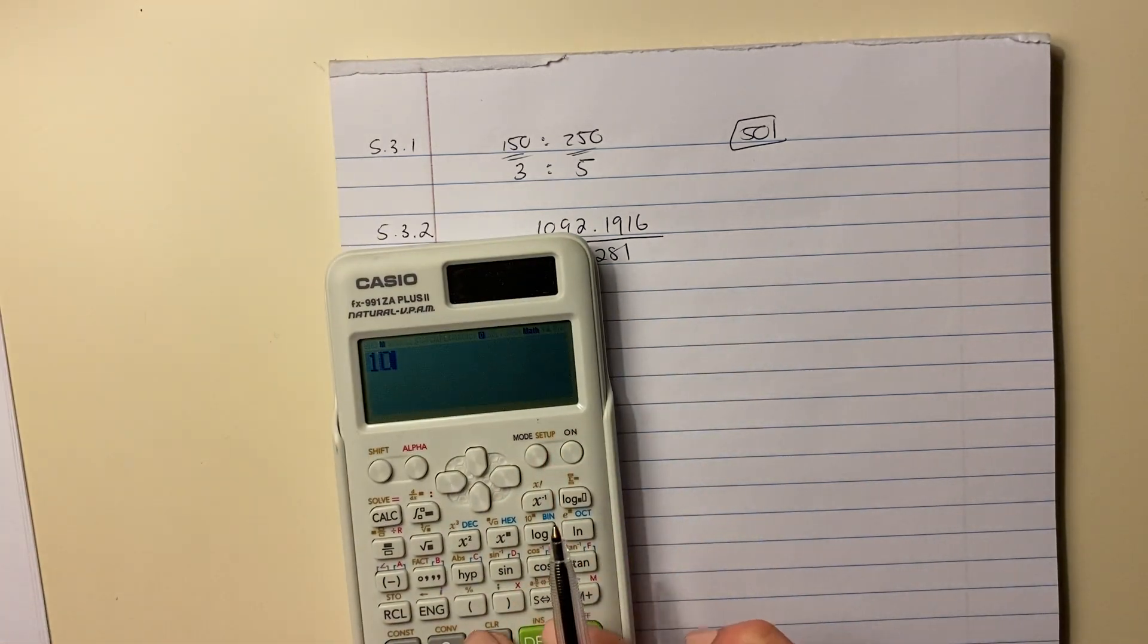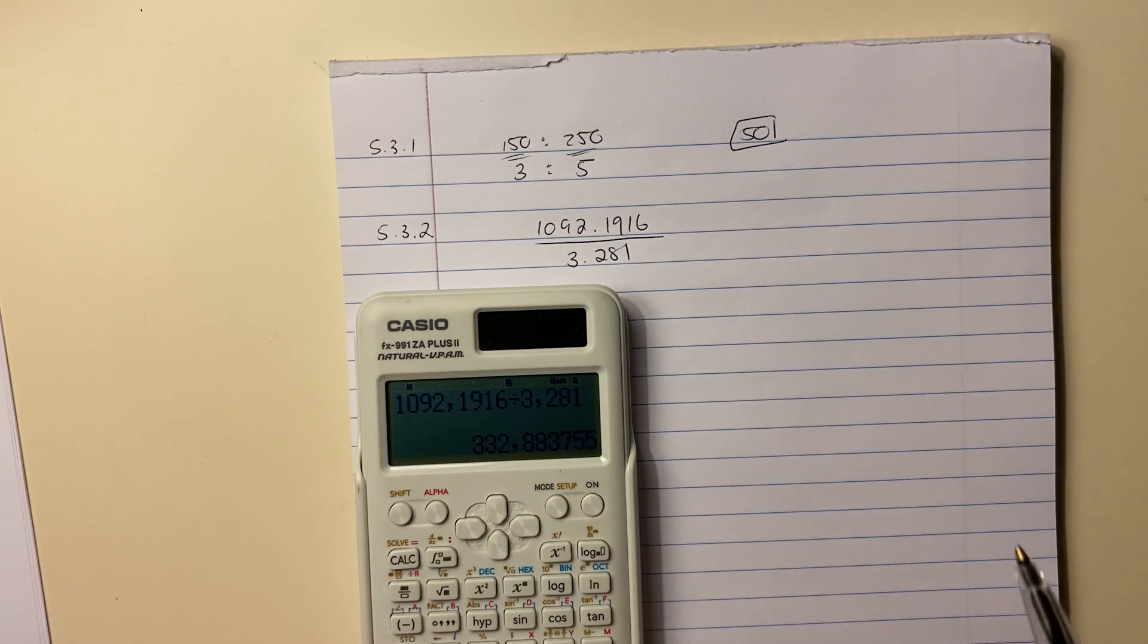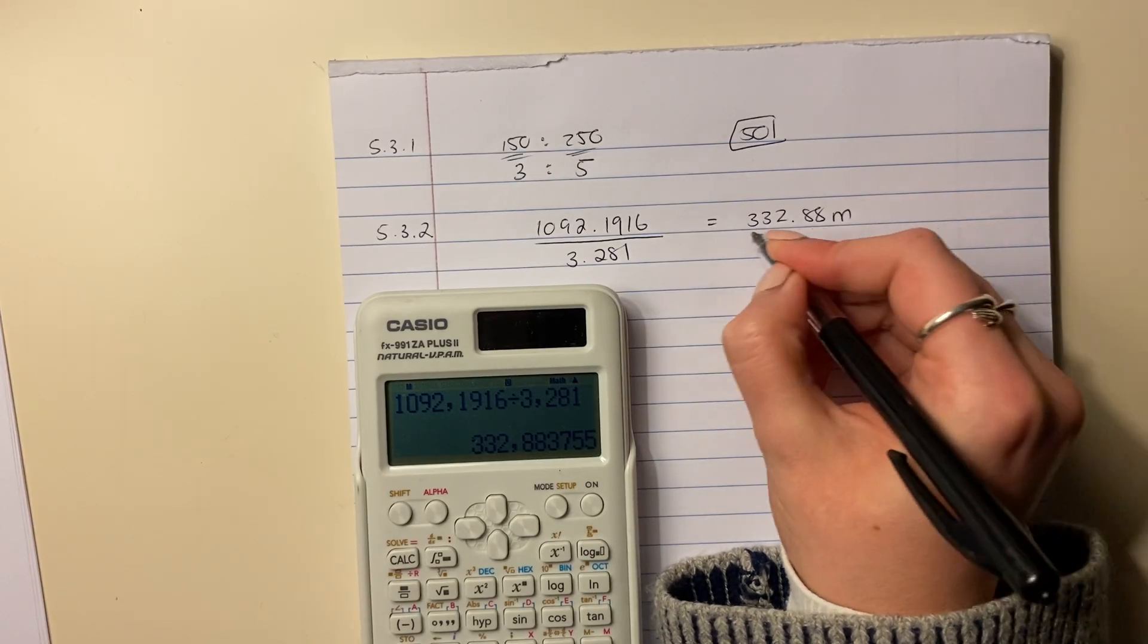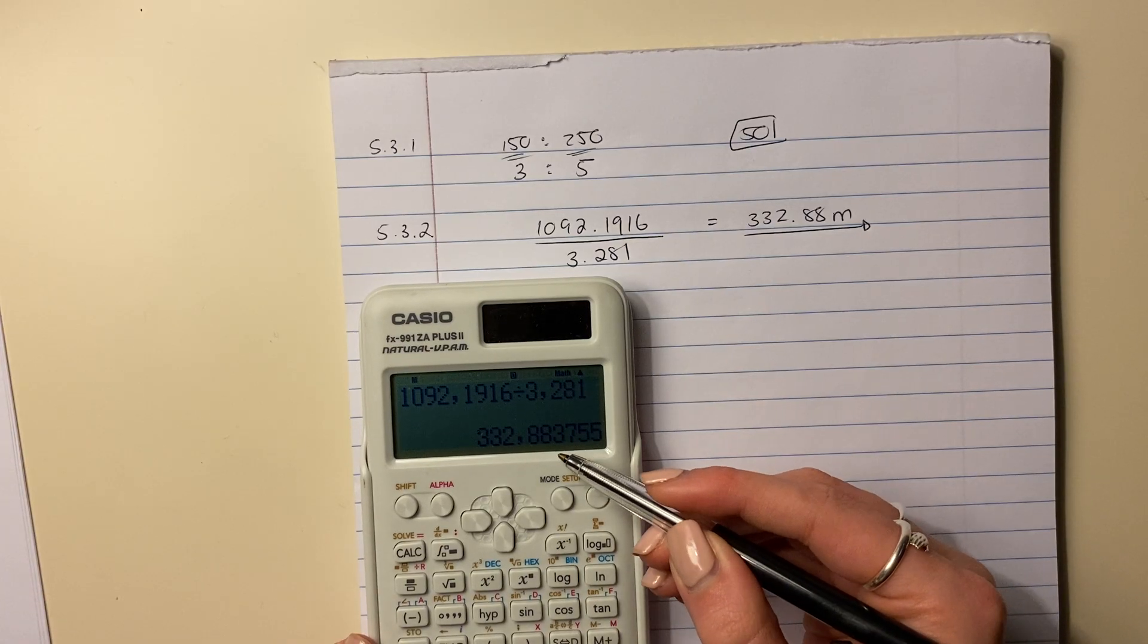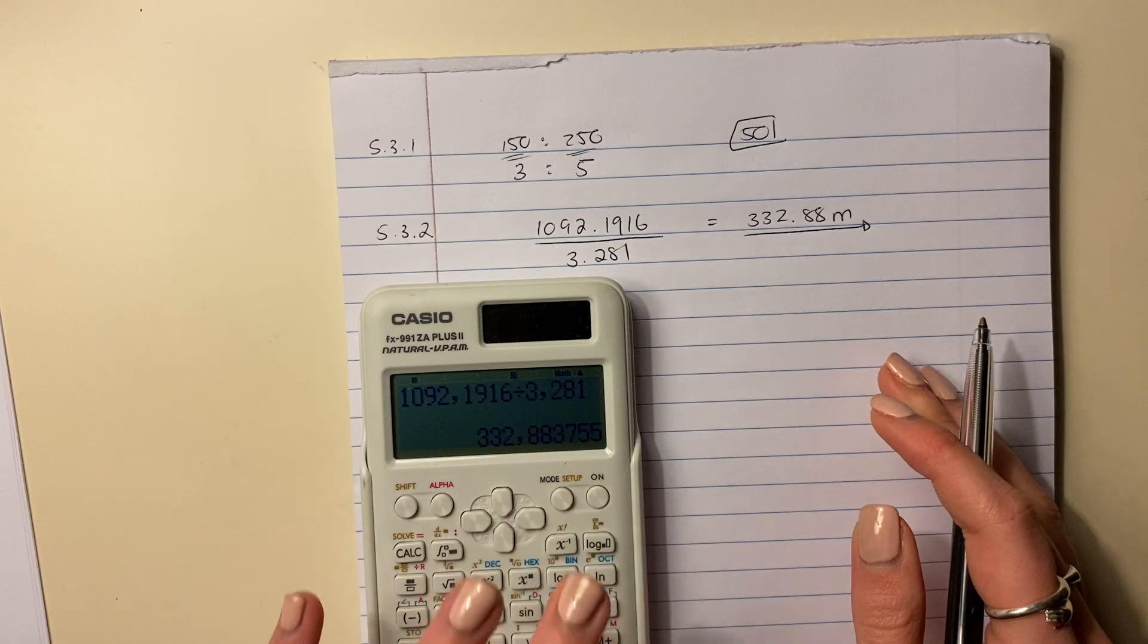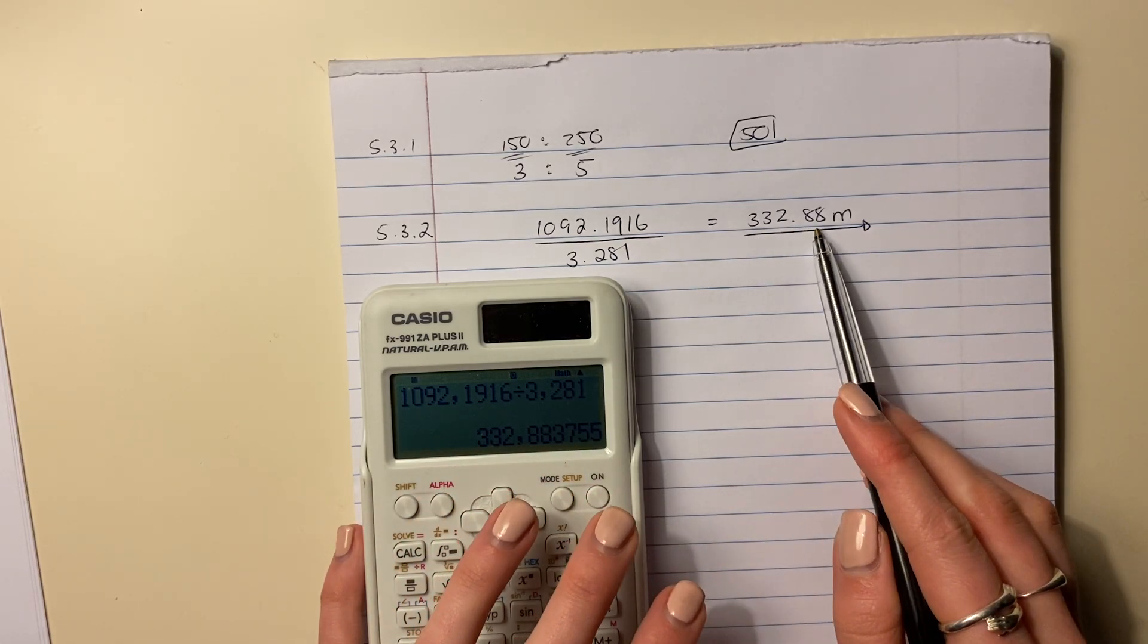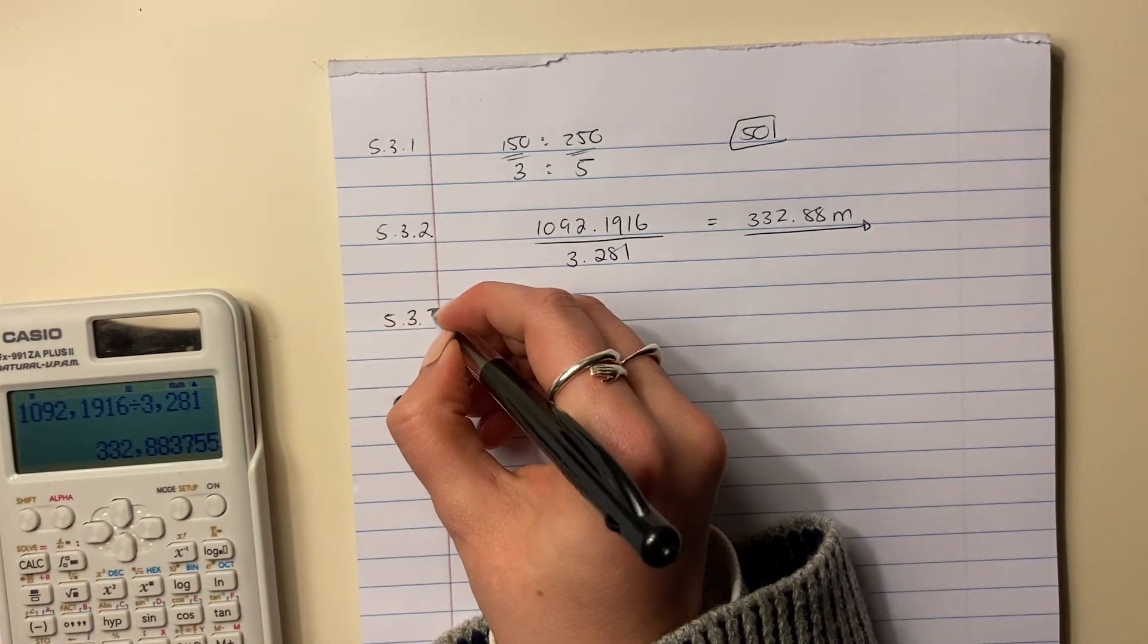So we're going to say 1092.1916 divided by 3.281. And your answer is 332.88 meters. Please remember your unit and to round off to two decimal places. Because the third decimal place is below 5, it is 3, we're going to round it down. So it's going to be 332.88. Let's move on to the next question.